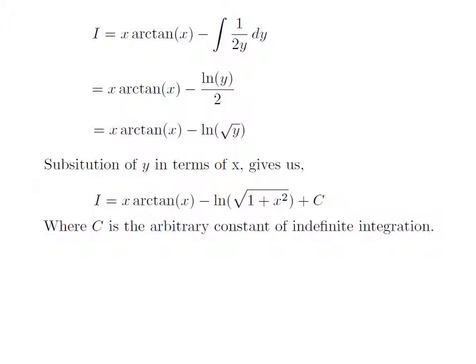We had assumed y is equal to 1 plus x squared. Substituting back, I is equal to x into arc tangent of x minus natural log of the square root of 1 plus x squared, plus C. This C is the arbitrary constant of indefinite integration — never forget to add this constant at the end of any indefinite integration.